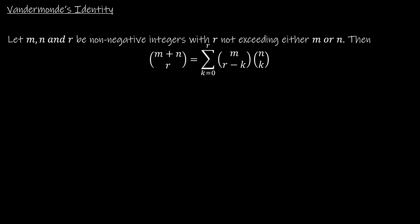So r is less than m, r is less than n. Then m plus n choose r is equal to the summation, as k goes from 0 to r, of m choose r minus k times n choose k.